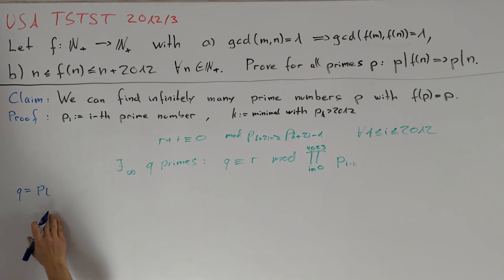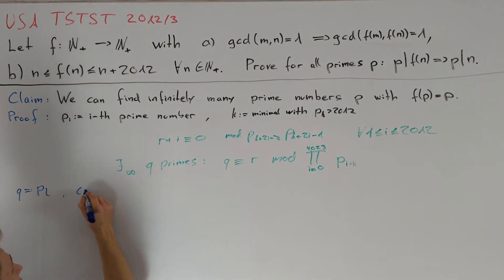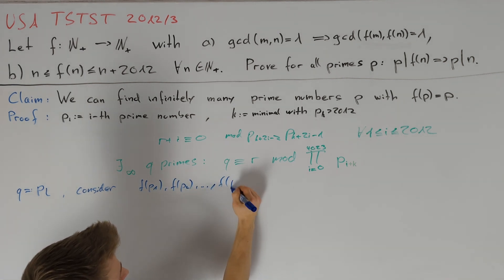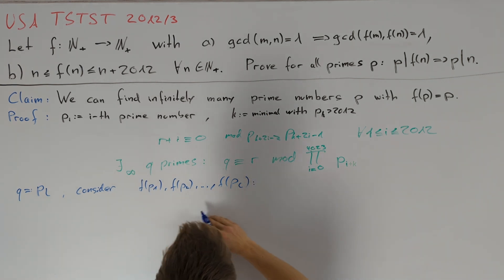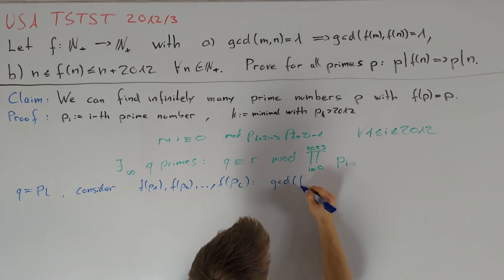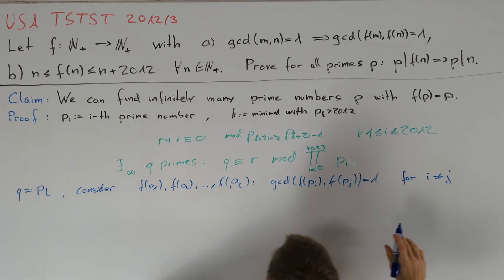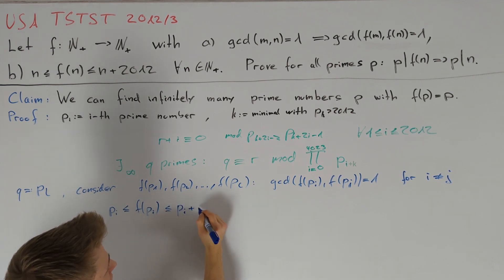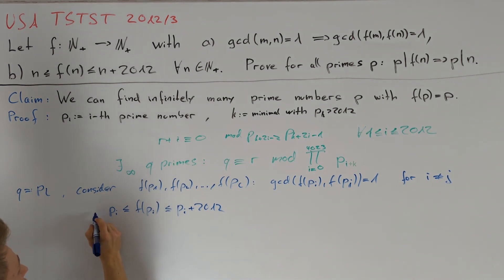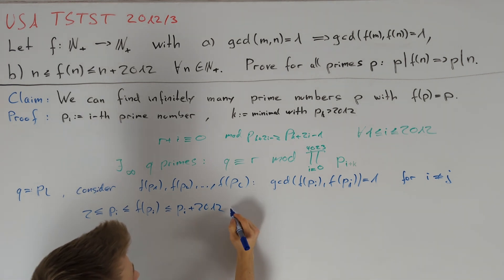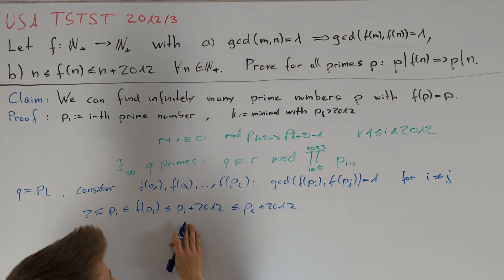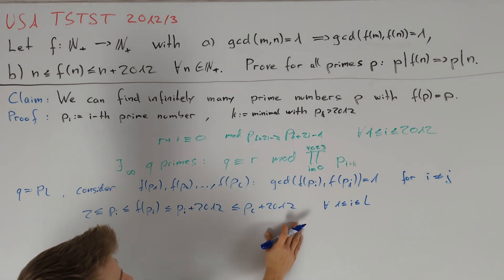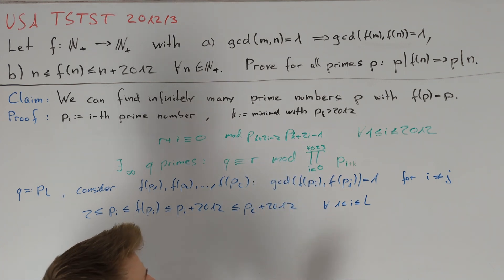Now we want to prove that for all these prime numbers pl, f(pl) = pl. Consider all the values f(p1), f(p2), ..., f(pl). By condition (a), since pi and pj are co-prime, f(pi) and f(pj) are also co-prime for i ≠ j. Condition (b) tells us pi ≤ f(pi) ≤ pi + 2012. The left-hand side is bounded below by 2, and the right-hand side above by pl + 2012 for i between 1 and l. By our construction of pl, all of pl+1 up to pl+2012 are divisible by one of these primes, and therefore none of these numbers are prime.